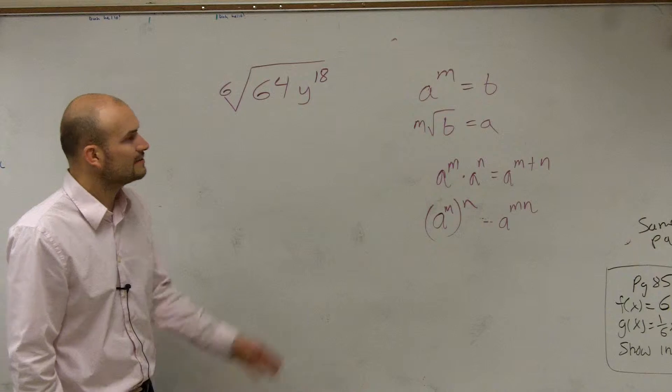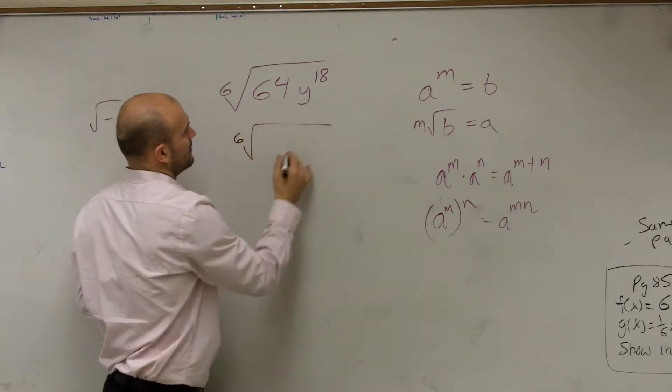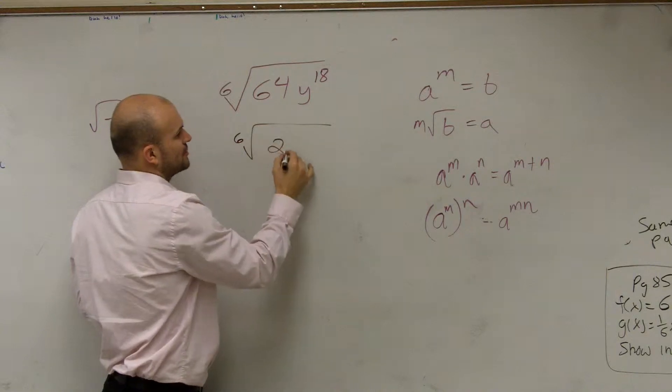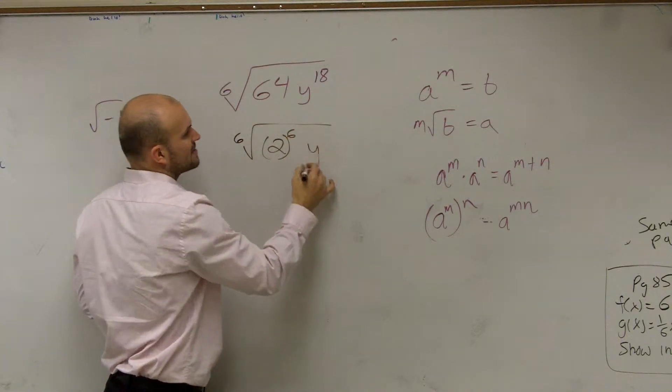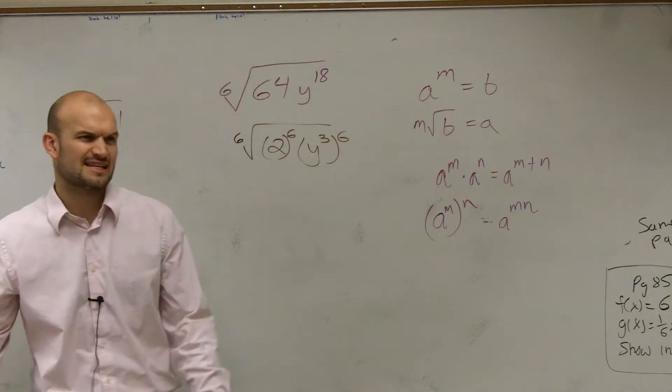So you have here, same thing, 6th root of 64. We know we can write that as 2 raised to the 6th power. And this could be y to the 3rd power times the 6th, because 6 times 3 gives us 18.